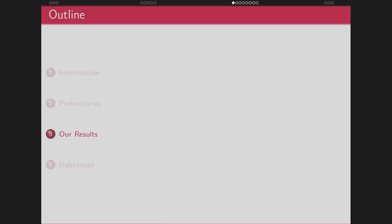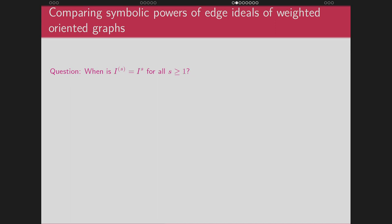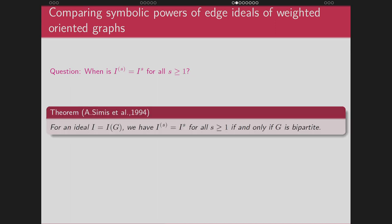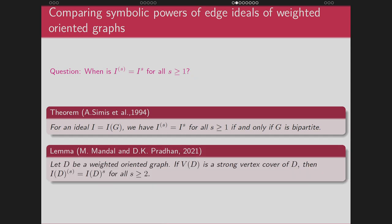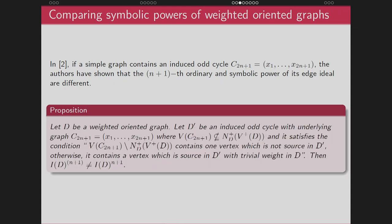The question we are interested in is: when are the symbolic power and ordinary power equal for all values of S? For simple graphs, this was a famous result by Simis — the ordinary and symbolic powers are equal for all S ≥ 1 if and only if G is bipartite. This completely classifies the class of graphs for which equality holds. We then investigated whether a similar criterion can be given for the edge ideal of weighted oriented graphs. In this direction, we first proved that if D is a weighted oriented graph such that the vertex set is a strong vertex cover, then the symbolic and ordinary powers are equal. We then asked whether the converse is also true, and under certain conditions it is.